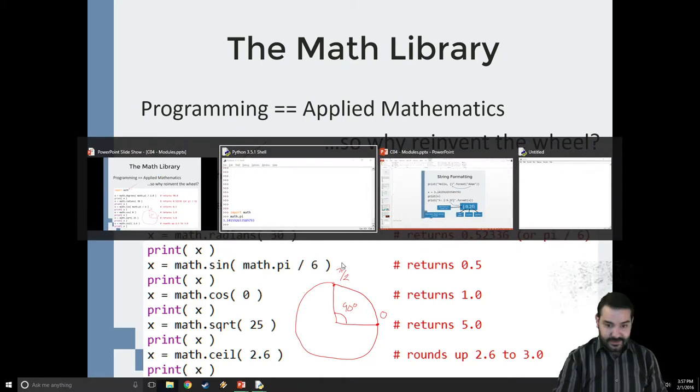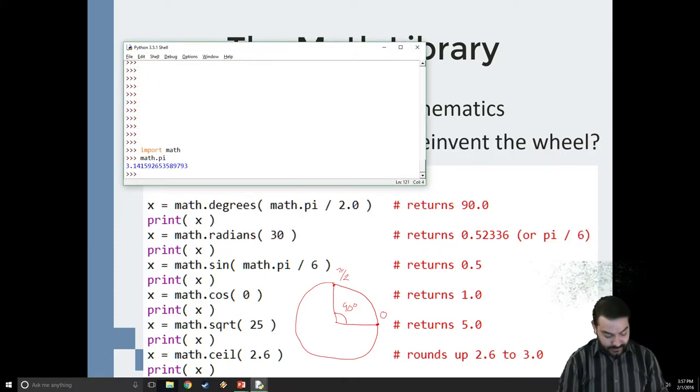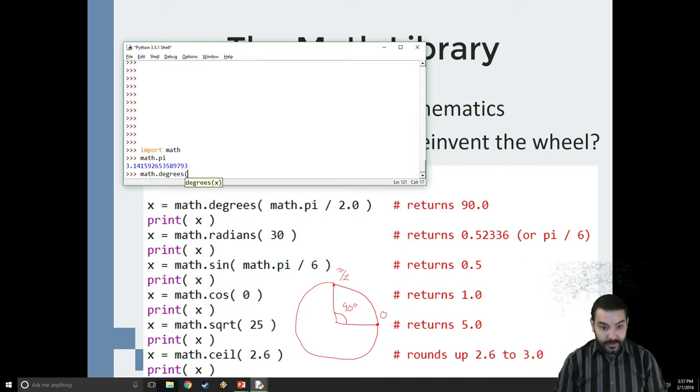So I can go math.degrees, and it's going to say 'alright, I'm expecting something from you.' I'm going to type in math.pi divided by 2.